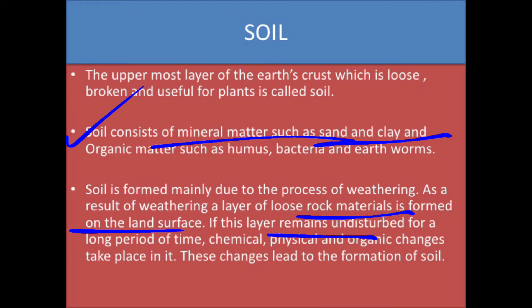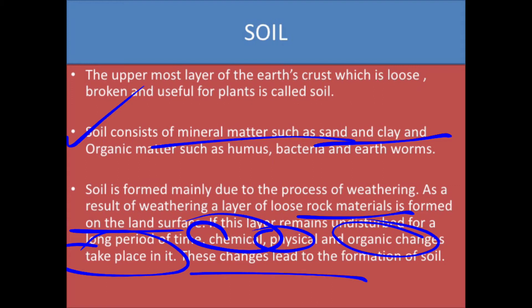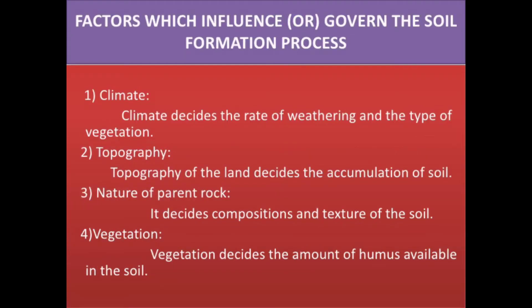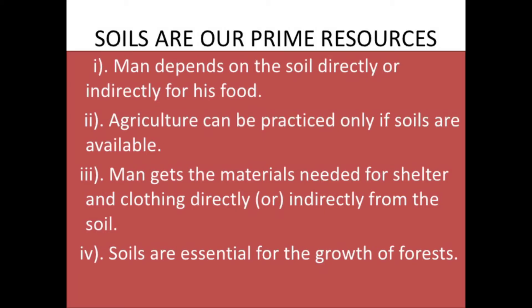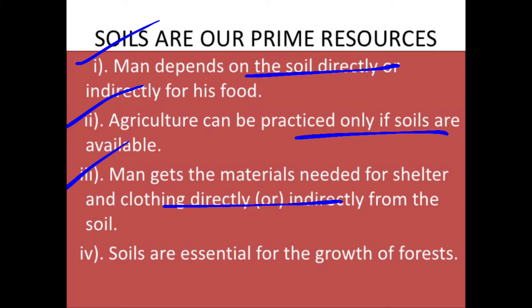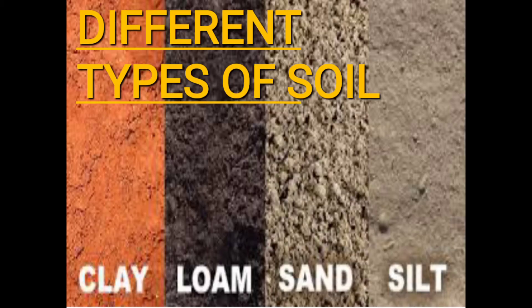If this loose layer remains undisturbed for a long time, chemical, physical, and organic changes take place, leading to the formation of soil. Soil is our prime resource — men depend on soil directly or indirectly for food, since plants grow in soil. Agriculture can be practiced only if soil is available. Men get materials needed for shelter and clothing directly or indirectly from soil. Soil is also essential for the growth of forests. In Class 10 we study six types of soil.